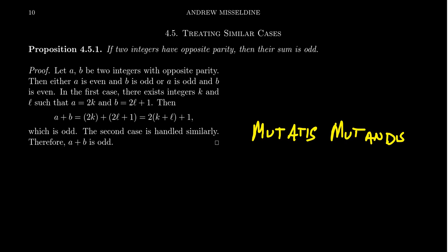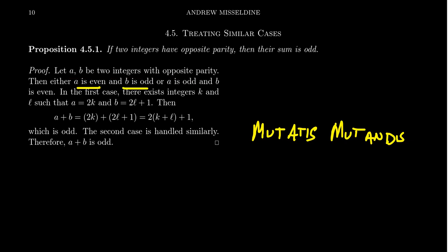Let me provide an example. Consider this proposition: if two integers have opposite parity — meaning one of them is even and one of them is odd — then their sum is automatically an odd number. Let a and b be two integers with opposite parity. There are two possibilities: a is even and b is odd, or a is odd and b is even.